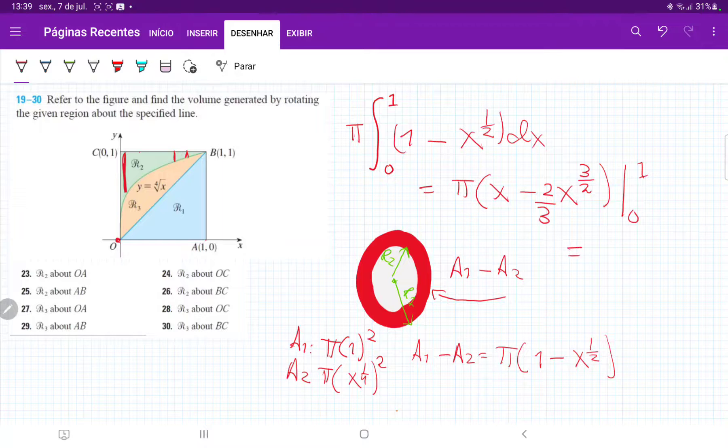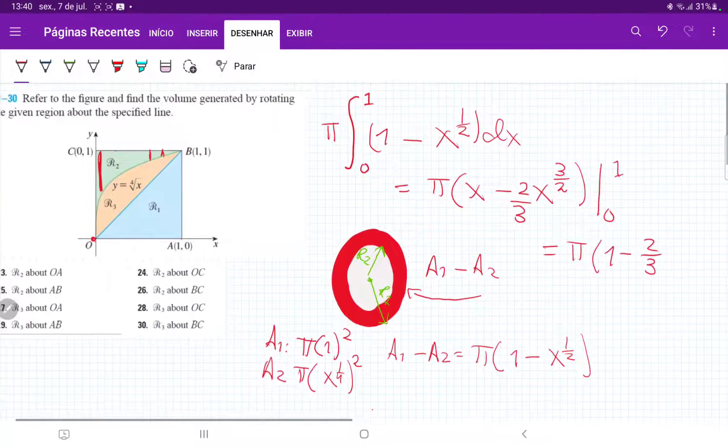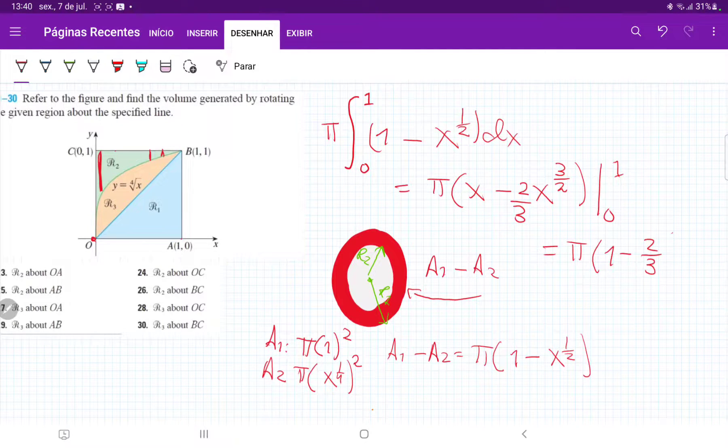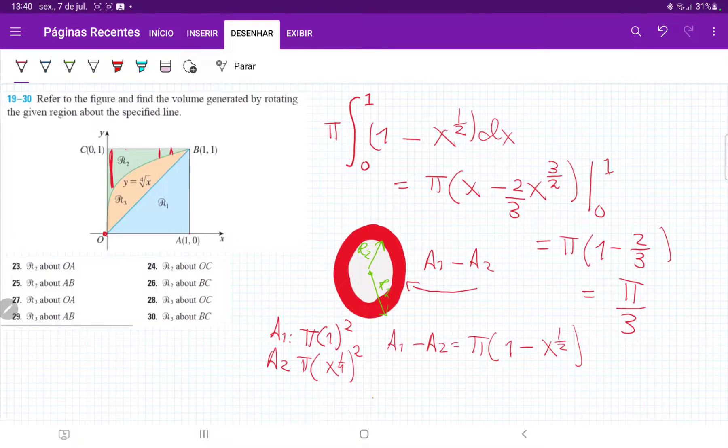So when we plug in our boundaries, this will give us pi times, that's 1 minus, and plug in 1 here, it's going to give us minus 2 thirds, right? And we don't need to plug in the lower boundary because everything is going to go to 0. Therefore, the volume is just 1 minus 2 thirds, so it's just pi over 3. And that's what we get when we rotate R2 about OA.